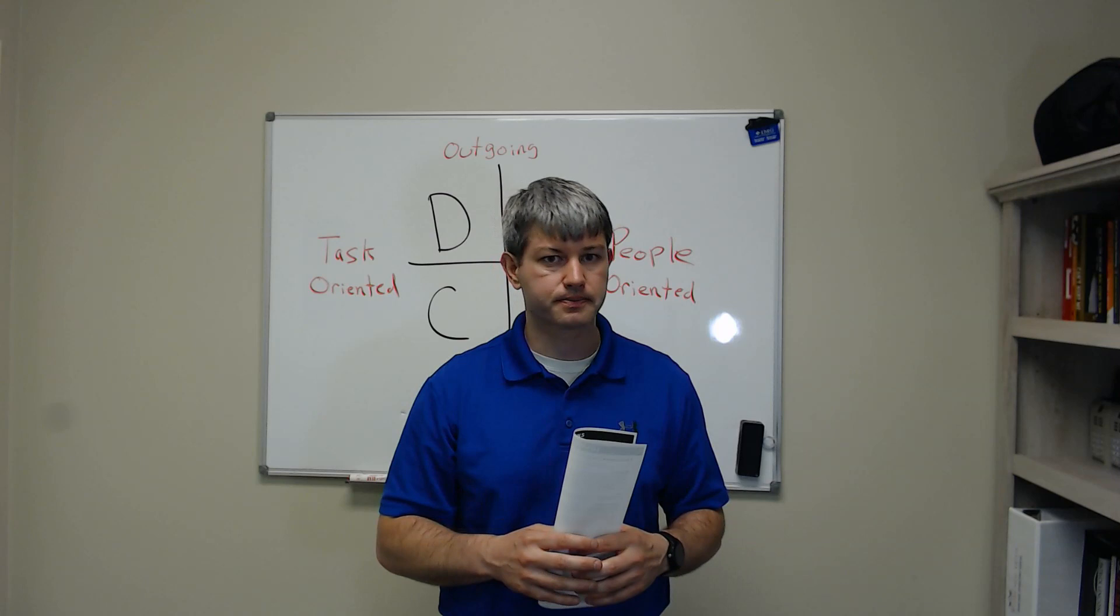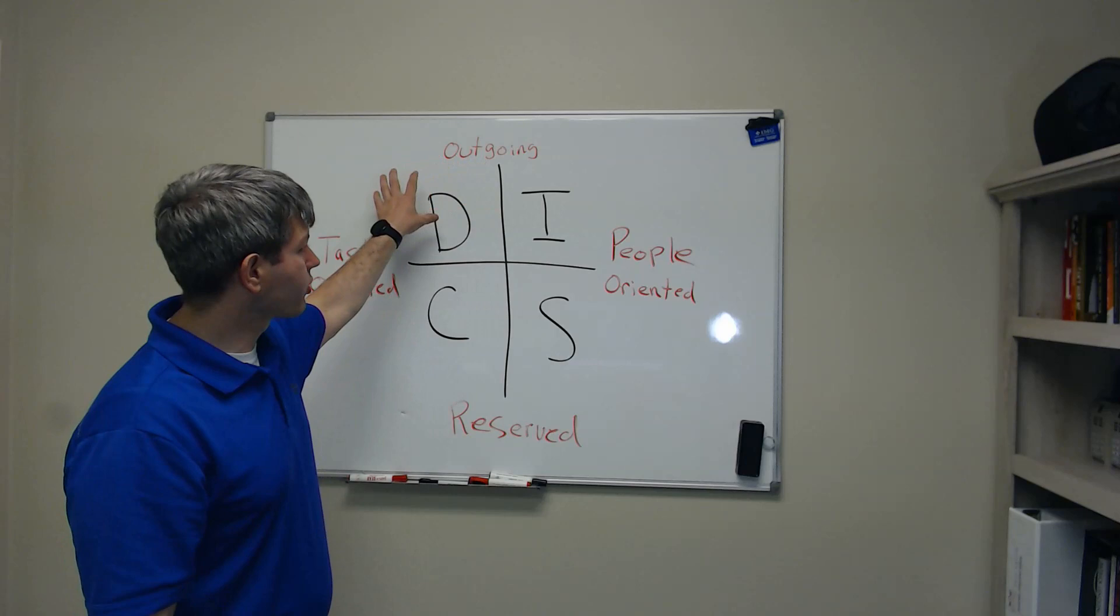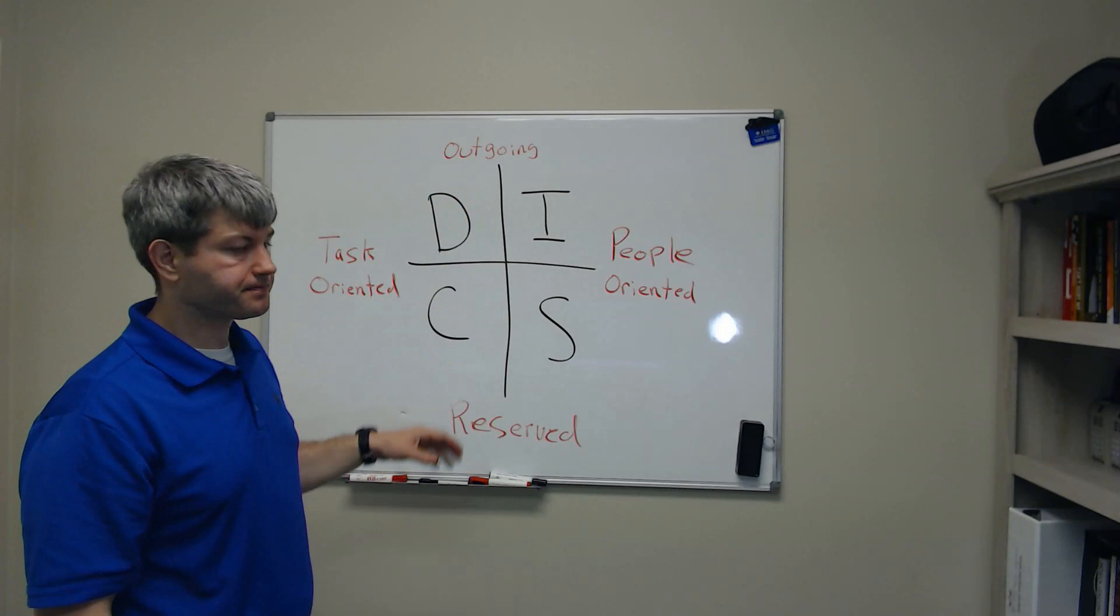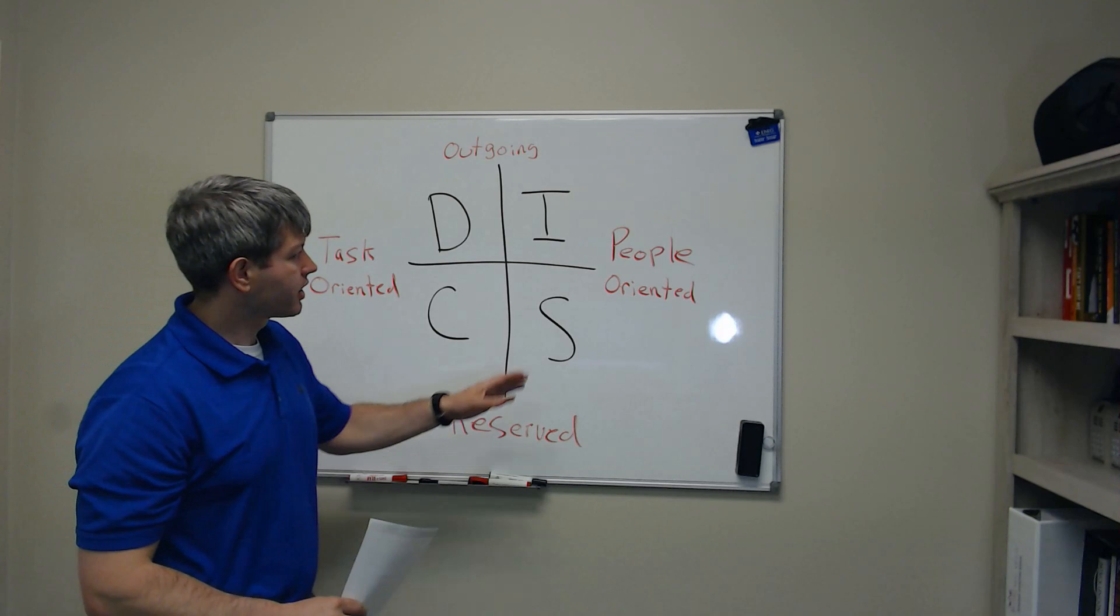So we've got the DISC personality right here. As you can see up at the top, these people with the D and the I personality are more outgoing. If you come to this side right here, the D and the C are more task driven versus the I and S are people oriented. And then the C and the S are more reserved.